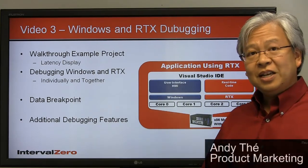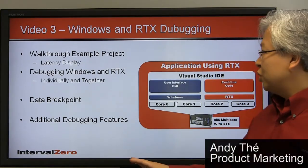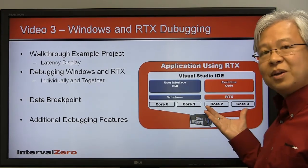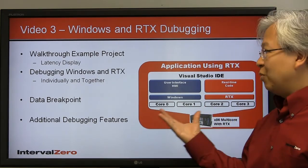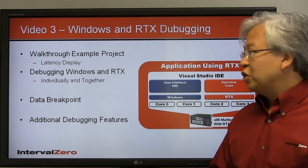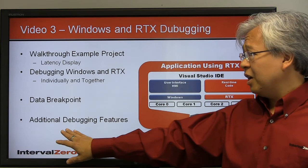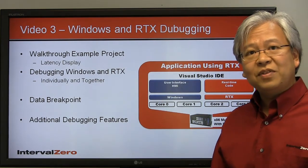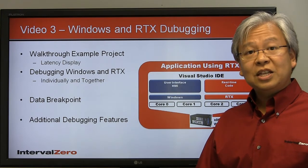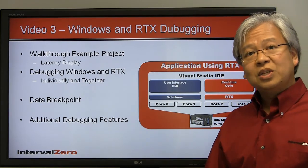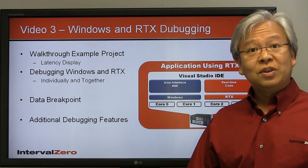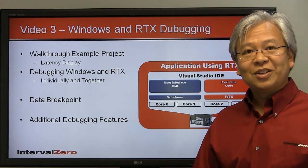As you've just seen, it's straightforward and easy to use Visual Studio to attach and debug a Windows application talking to a real-time application in RTX. We also used data breakpoints to help debug their communications. Now let's move on to some additional debugging features, using a simple periodic timer project from videos one and two as a backdrop, to show more features available in Visual Studio with RTX 2012.